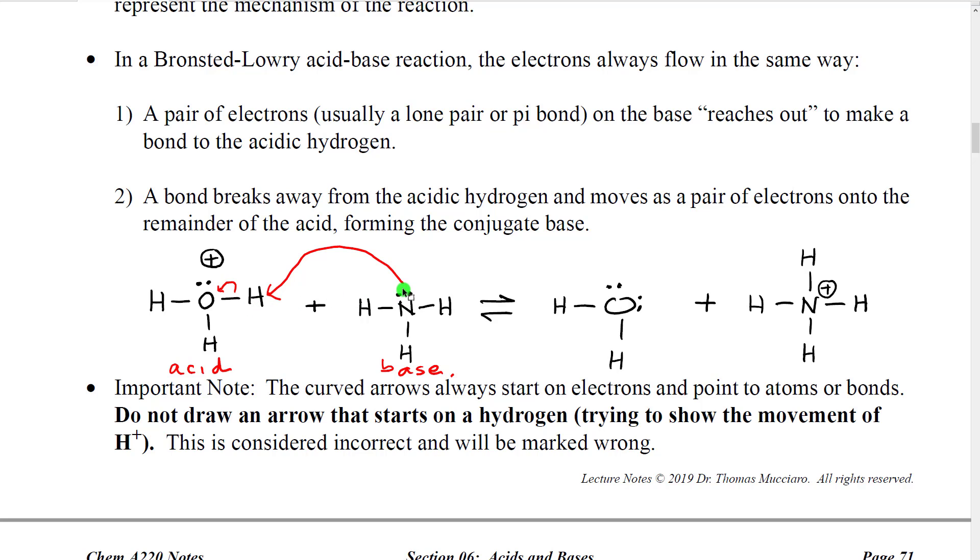So when we reach out and make a bond to the hydrogen on one side, we let go of the bond on the other side, that bond then just flows as a pair of electrons onto the atom that was formerly bonded to the hydrogen. So it looks like this. Grab here, let go there. The molecule that's doing the grabbing is going to be our base. The molecule that's letting go is going to be our acid.